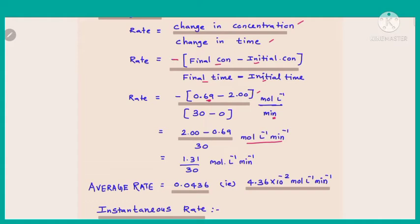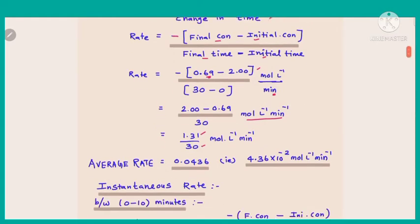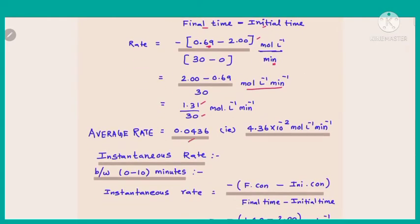The second term becomes positive: (2 − 0.69) / 30 = 1.31 / 30 = 0.0436, which is 4.36 × 10⁻² mol/L/min. This is the rate of the reaction over the entire time period of 30 minutes, so this is what we call the average rate. On average, every minute the concentration changes by about 4.36 × 10⁻² mol/L.